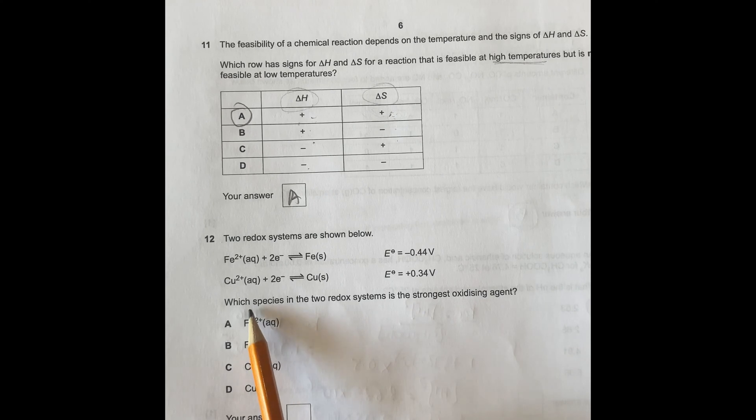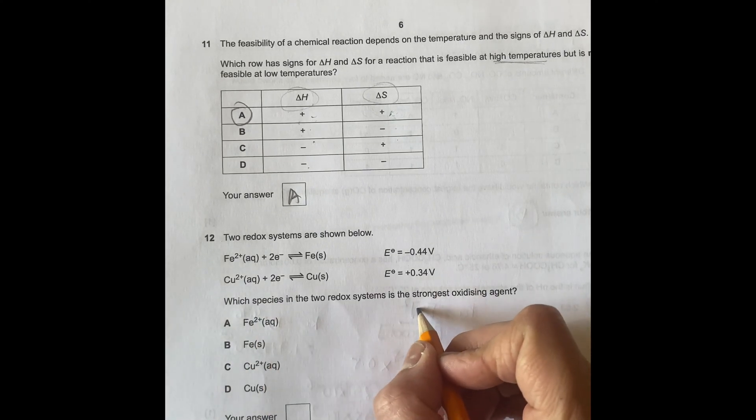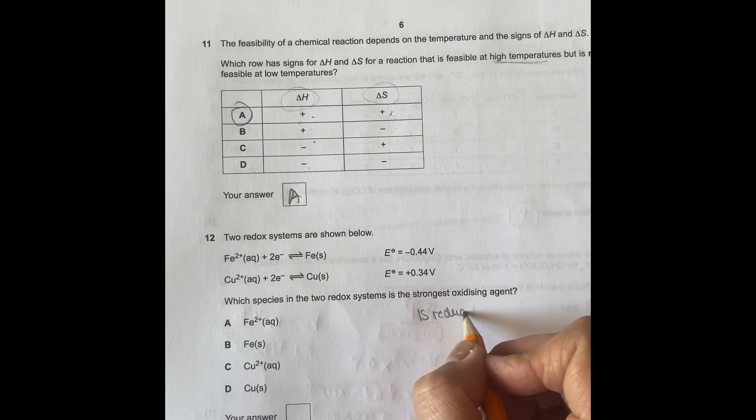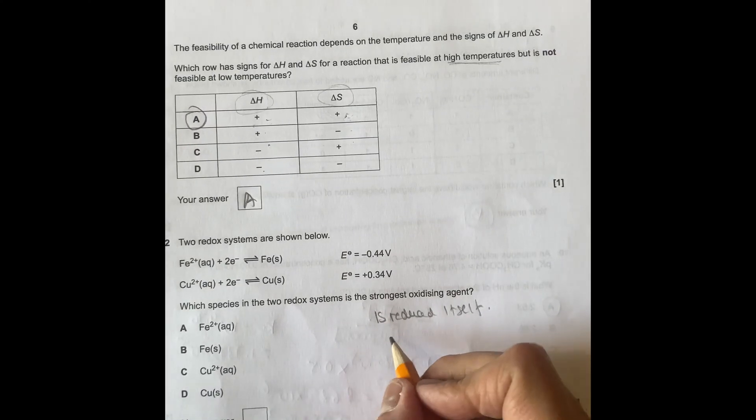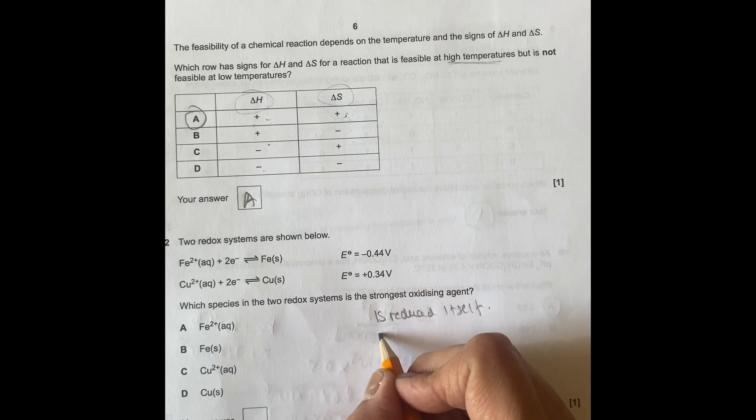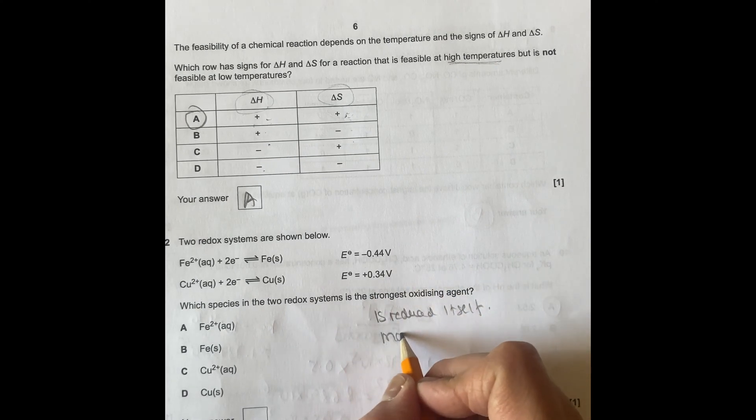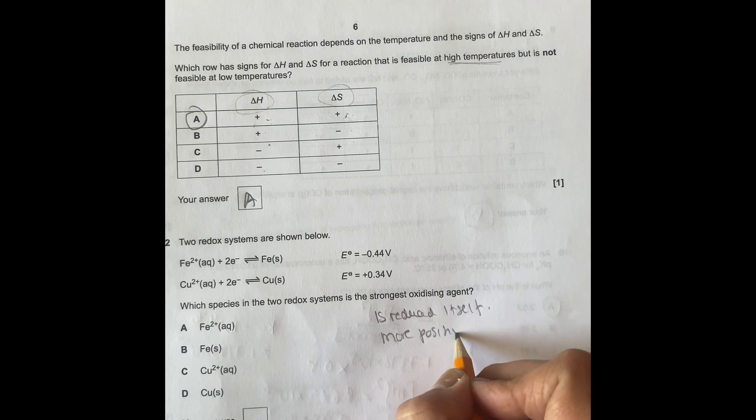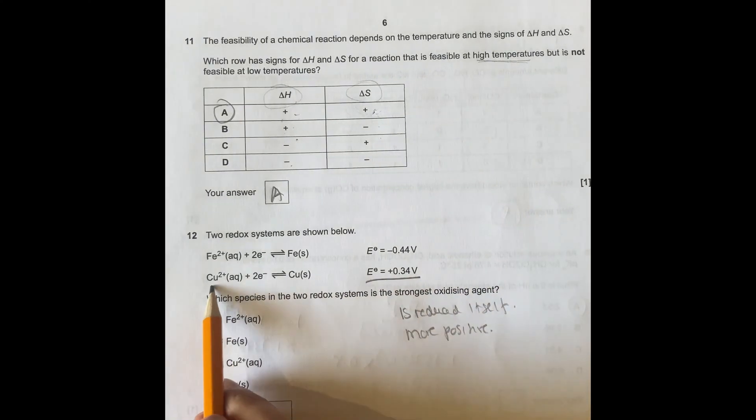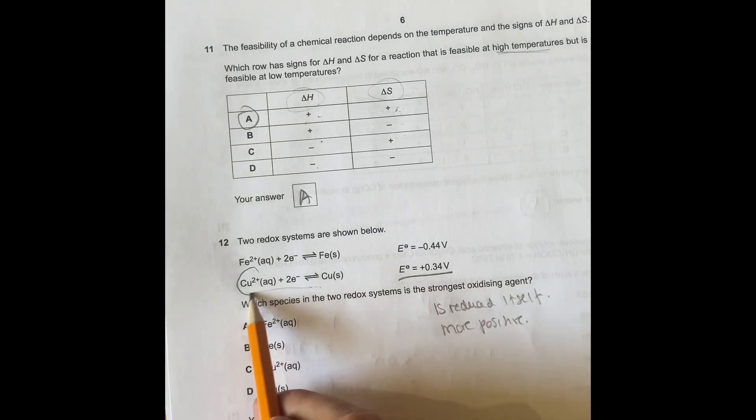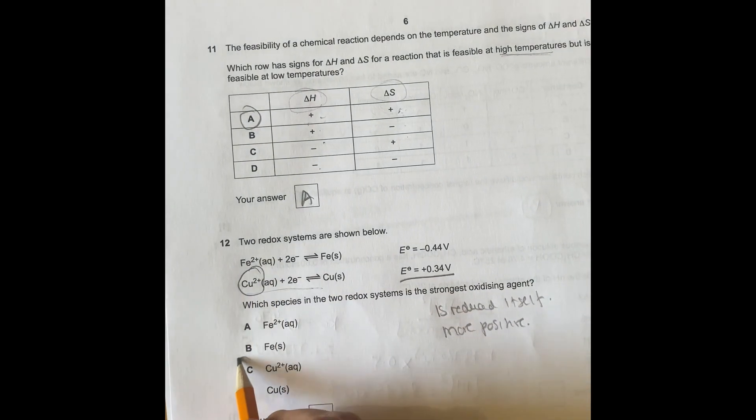Two redox systems. It says here, which system has a strong oxidizing agent? So oxidizing agent is reduced itself. So if it is reduced, it gains electrons, and also is less negative or more positive. So it's the most positive, it gains electrons, this one is gaining electrons here, so therefore the answer is Cu 2 plus, so it's this one here, C.